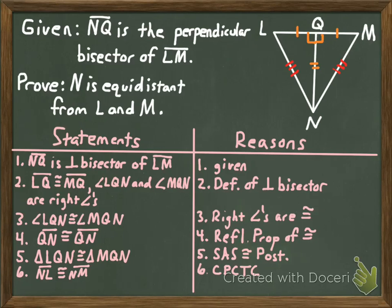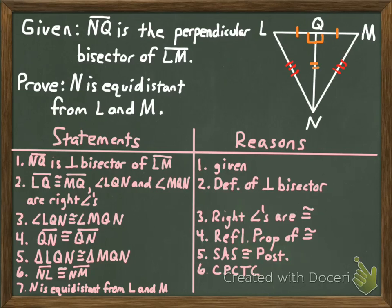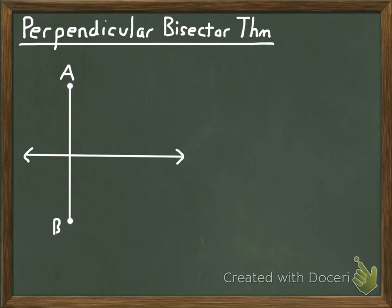That step could be sufficient for the proof, but I want to phrase the final statement exactly as written in what we're trying to prove. So I can state that N is equidistant from L and M, using the definition of equidistant to go from the congruent segments statement to that final conclusion. What we just did is prove a theorem - the theorem called the perpendicular bisector theorem, which I'm going to teach you right now.